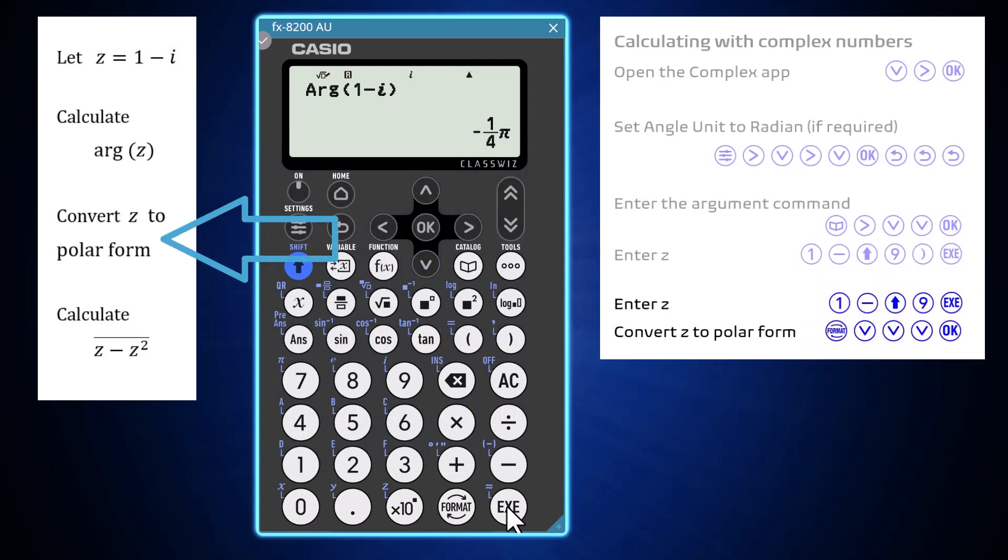To convert z into polar form, now that we know its argument, one way would be to find its modulus or absolute value, a command that can be found in the catalogue under numeric calculations.